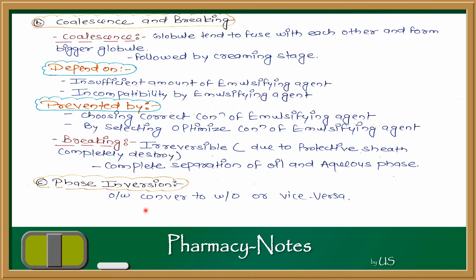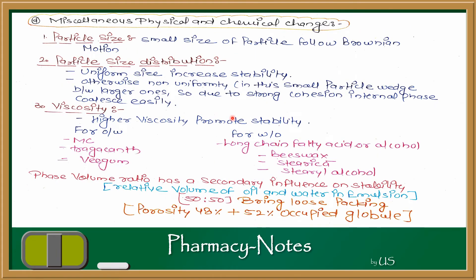Phase inversion can occur due to incompatibility in the oil or vice versa. Miscellaneous physical and chemical changes also affect incompatibility and create particle size issues. Small particles are more stable; they are in motion, and gravitational force and random motion affect particle size distribution. If particles are of uniform size, stability is also better. Cohesion force, coalescence, creaming, and phase separation all contribute to instability.